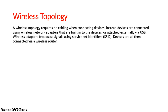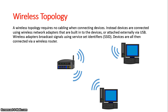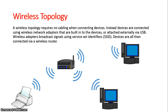A wireless topology doesn't use any cables at all. Instead, devices are connected using wireless network adapters that are either built into them or connected using USB. They all connect to an address known as a service set identifier, which needs to be set up before the network can be produced. This can be used for nodes and also for devices.